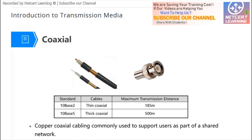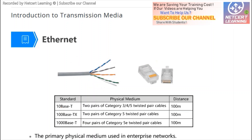Coaxial cable only supports 10 megabits per second. In 10-base-2, the '10' means 10 Mbps. Nowadays in enterprise networks, 10 Mbps Ethernet is seldom used.